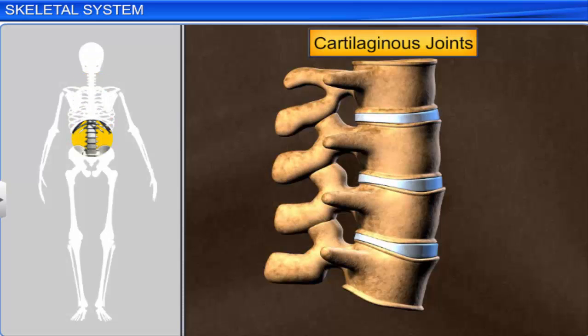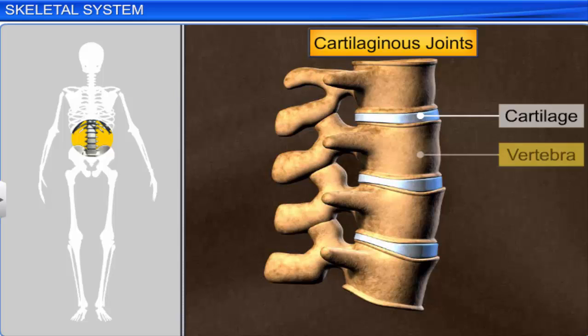Another type is the cartilaginous joint, in which bones are joined with the help of cartilage. This joint is found between the adjacent vertebrae in the vertebral column, which permits limited movement.